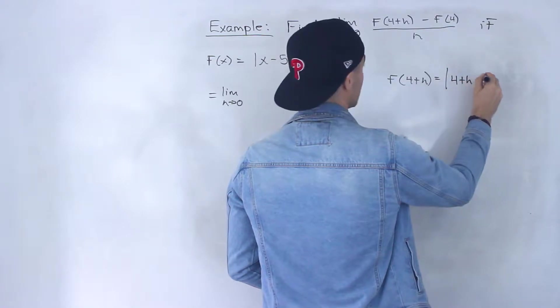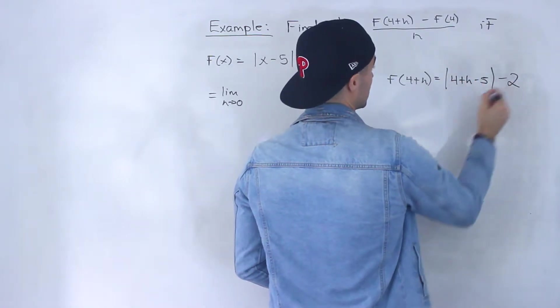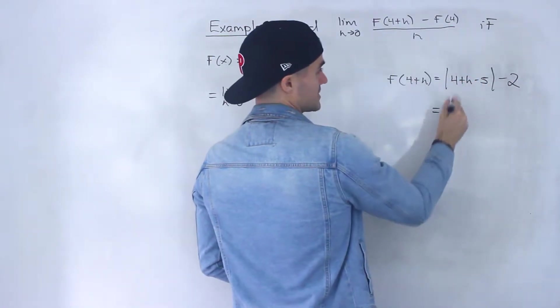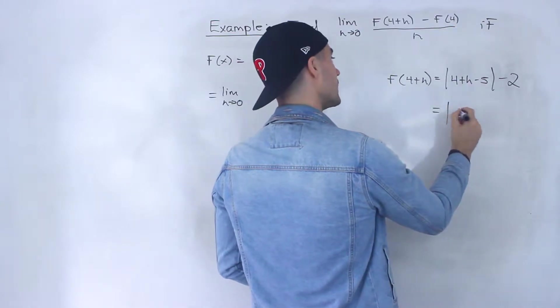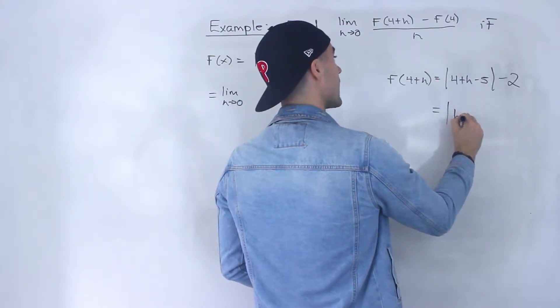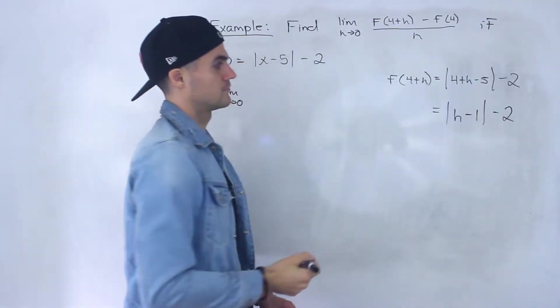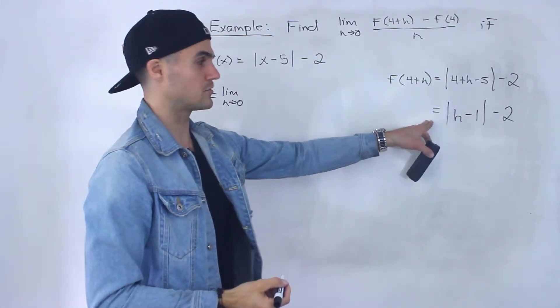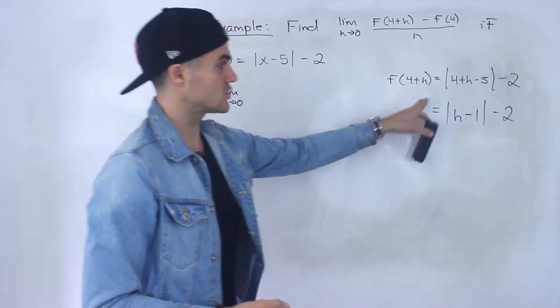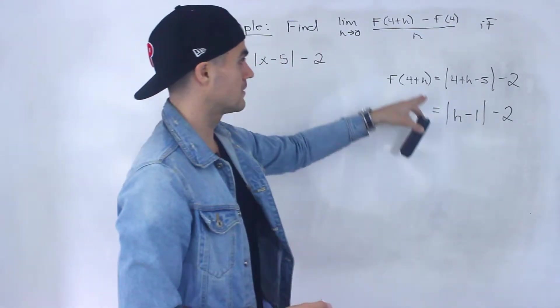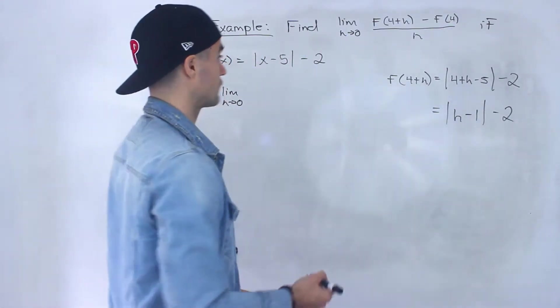If we simplify this here, we would end up with the absolute value of (h-1) - 2. And as of now, we can't simplify that any further. So this right here is the expression for f(4+h).